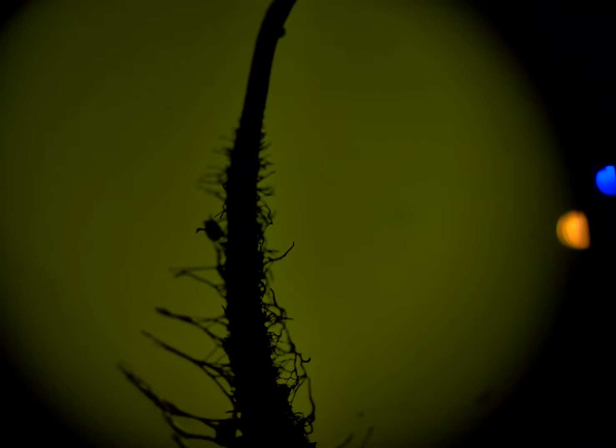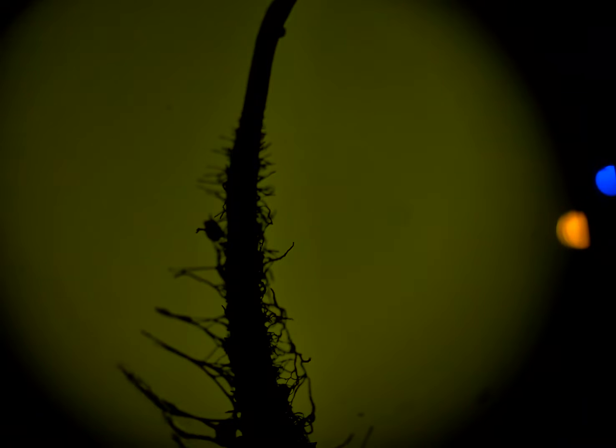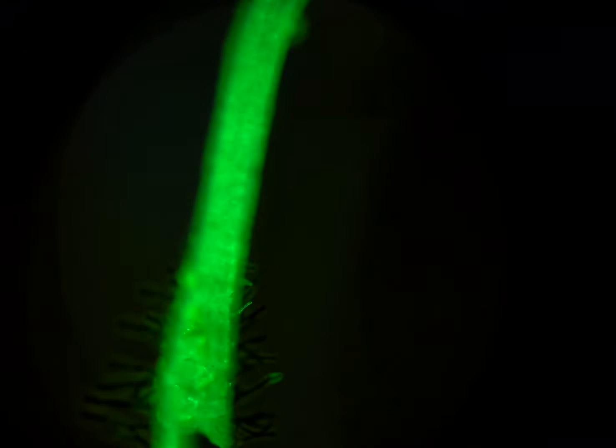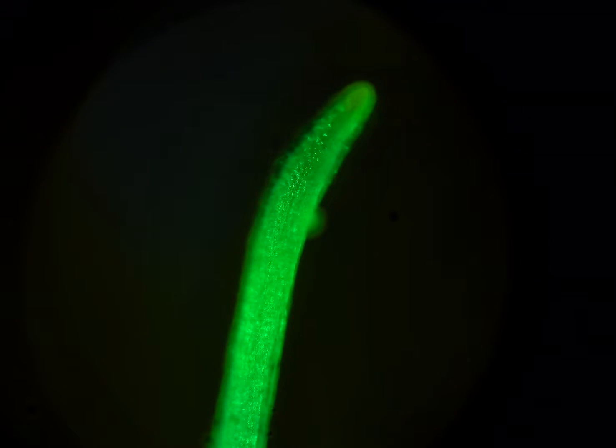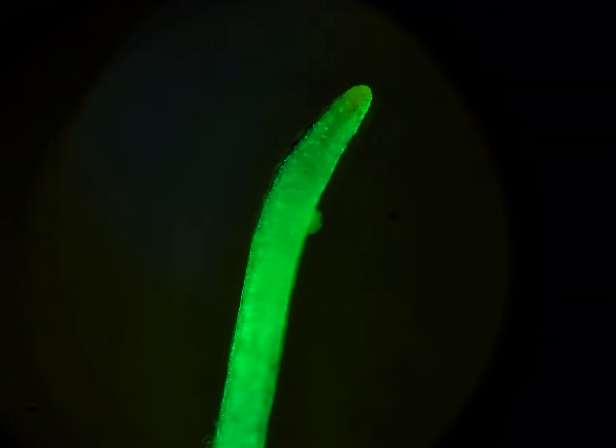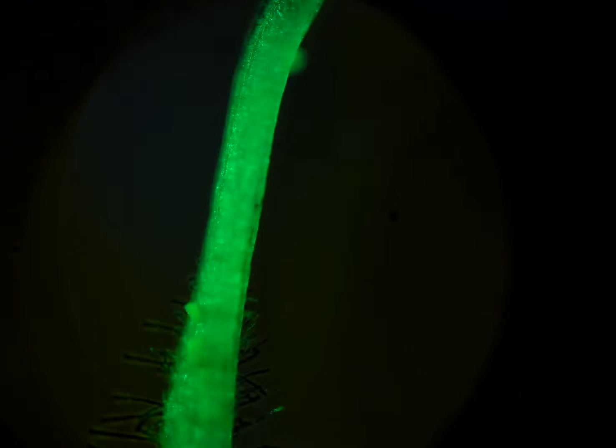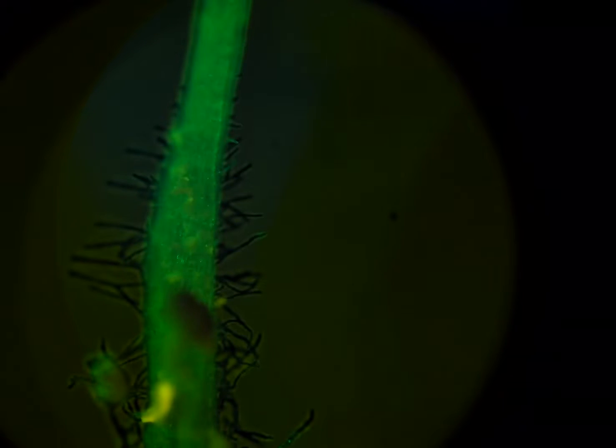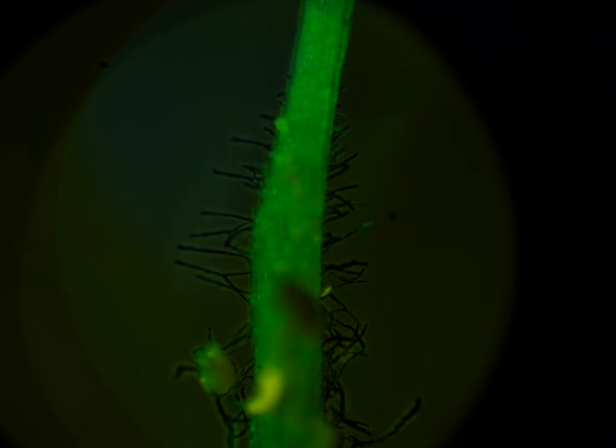And this primary root wouldn't have all these hairs all over it if there wasn't microbes participating in rhizophagy and being endophytes and producing the nitric oxide that actually is driving the formation of root hair. So you need microbes to actually have root hairs form. So we know there's microbes here.